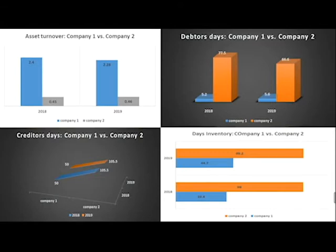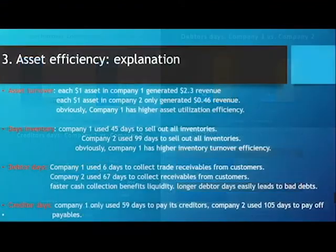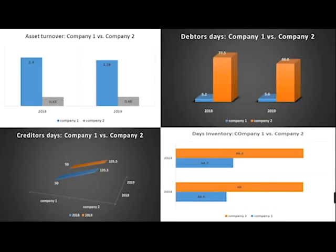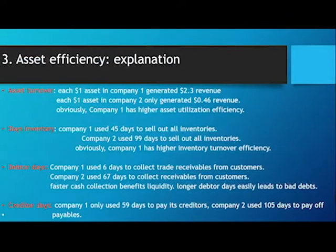Company one has a higher inventory turnover efficiency. For debtor days, company one uses 6 days to collect trade receivables from customers, while company two uses 67 days to collect receivables. Faster receivable collection benefits the liquidity of company one. Longer debtor days can easily lead to bad debt for company two.